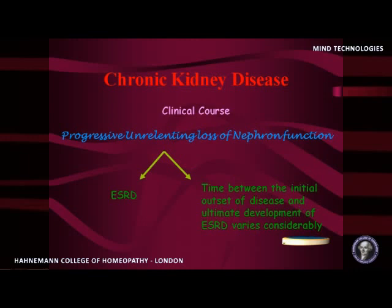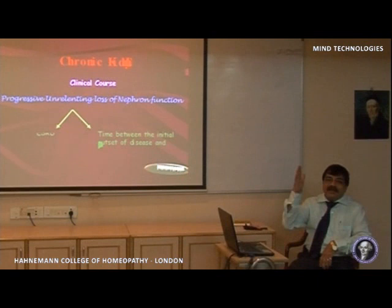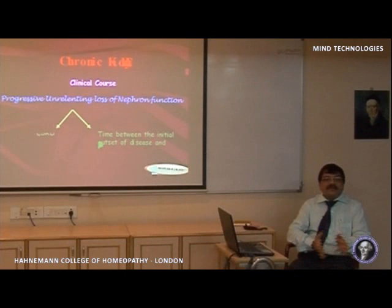Chronic kidney disease has a clinical course with a progressive, unrelenting loss of nephron function, which either progresses to ESRD — end stage renal disease. However, there is a time lapse between the initial onset of the disease and ESRD. When a patient first presents with certain kidney damage, it takes 2 to 15 years to progress to end stage renal disease or dialysis.